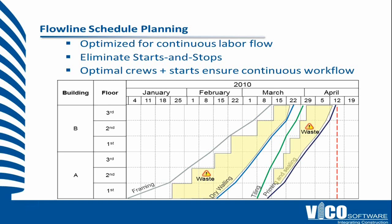We can then identify areas of poorly utilized location. The location breakdown structure means we can see where people are working, where they should be working, and where they're not working but should be. If we can address that early on, this structure allows us to have a more harmonious plan from the outset.